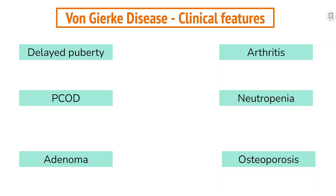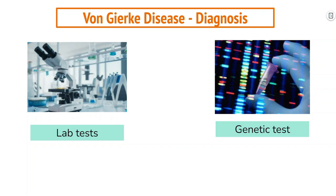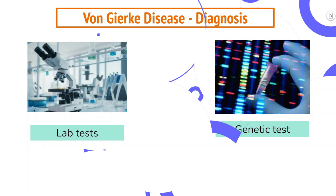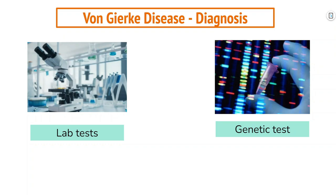Arthritis due to hyperuricemia as well as renal disorders may occur. Females with this condition may also have abnormal development of the ovaries leading to polycystic ovarian disorder. Affected individuals may develop adenomas in the liver and may suffer from recurrent infections due to neutropenia. GSD type 1 is diagnosed by labs indicating low sugar, high lactate, high uric acid, elevated triglycerides, and elevated cholesterol. Molecular genetic testing for G6PC and SLC37A4 genes is available to confirm the diagnosis and can also be used for carrier testing and prenatal diagnosis.